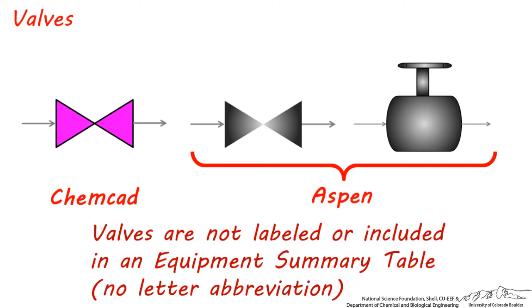Even though they signify depressurization on a process flow diagram, valves are typically considered ancillary equipment and not as important to label as, say, a pump, turbine, or compressor.